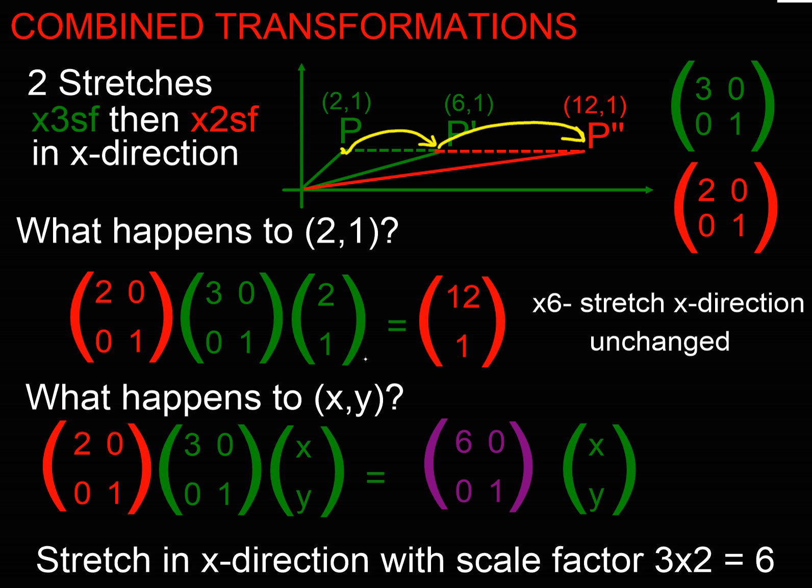Up there we could see that doing our first matrix multiplication we get to (6,1), and if we multiply by the second matrix—we've got to remember the order is important here—so we had to do the scale factor 3 first and then we did the scale factor 2 second, we end up at (12,1). Let's just see if that actually works in matrix form for all x and y values.